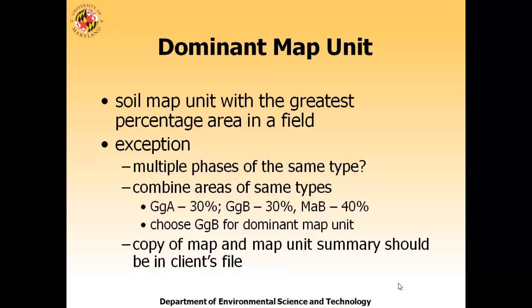In reviewing soils information this year, I came across one case where the dominant soil map unit didn't represent the field accurately—where there were multiple soil types in the same field. For example, a Glenelg loam 0–3% slope made up about 30% of the field, a Glenelg loam 3–5% made up another 30%, and a Manor that made up 40%. While Manor is the dominant map unit, Glenelg loam is the dominant soil type. Since soil type is a subset of soil series, it makes more sense to use the Glenelg B—the greater slope—as the dominant map unit for calculations. In most cases it will be the dominant map unit.